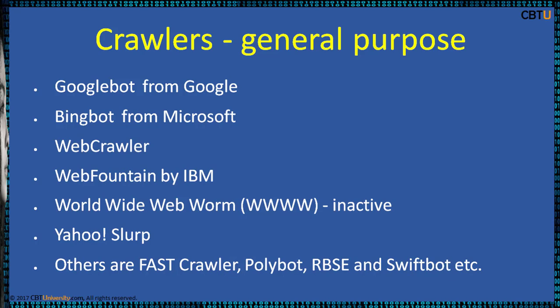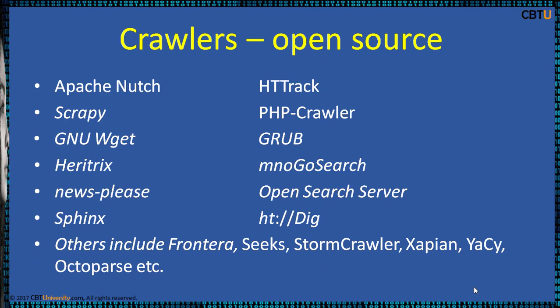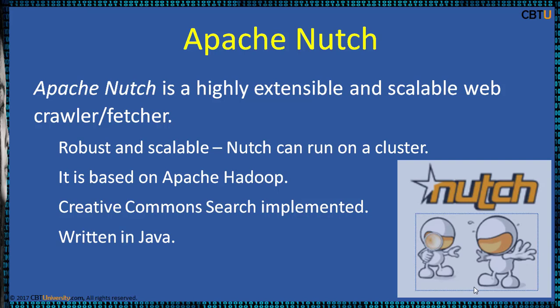Open source crawlers include Apache Nutch, Scrapy, HistoryTrack, PHP Crawler, and many others. Apache Nutch is a highly extensible and scalable web crawler based on Apache Hadoop and can be used with Apache Solr and Elasticsearch. It is written in Java, robust, scalable, and can run on a cluster. Nutch originated with Doug Cutting and Mike Cafarella. Doug Cutting is the creator of both Lucene and Hadoop.